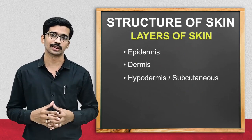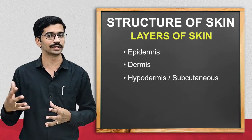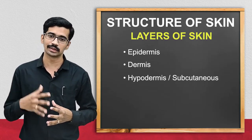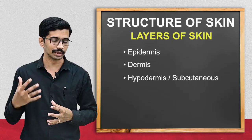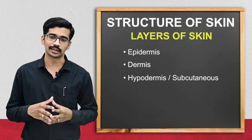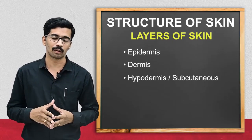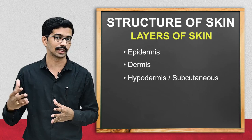The skin consists of mainly three different layers. The first one is the epidermis, the second one is the dermis, and the third one is the hypodermis, or we call it the subcutaneous layer.